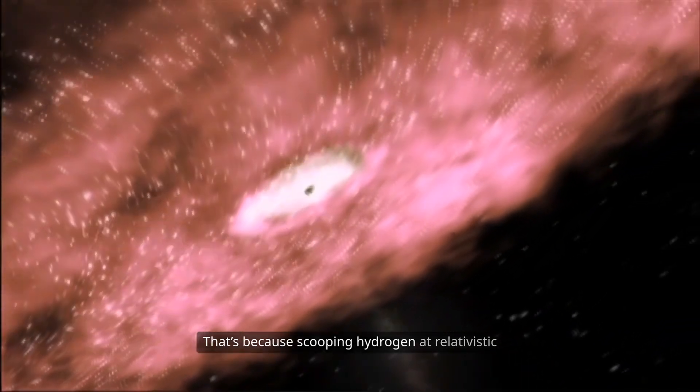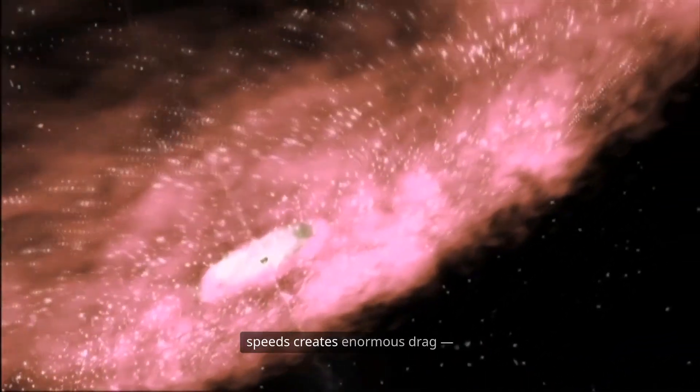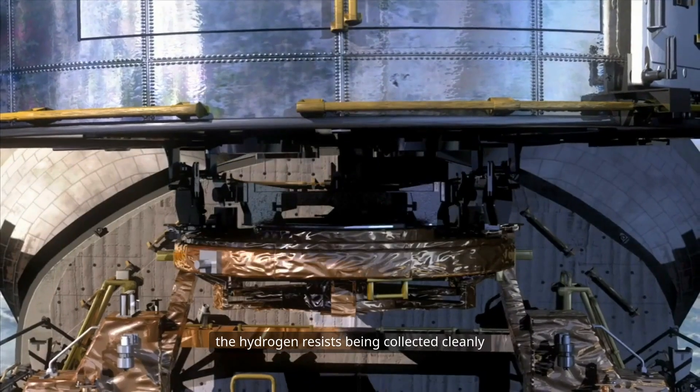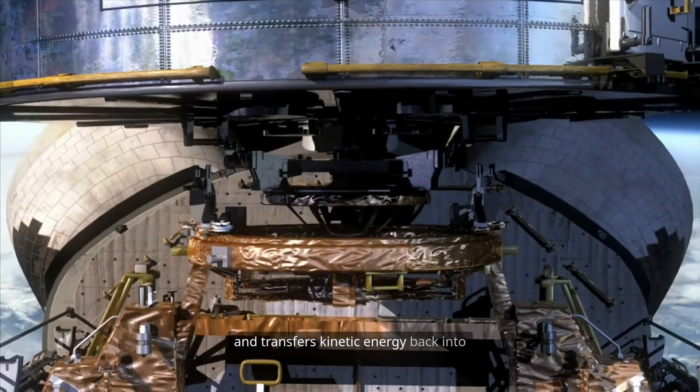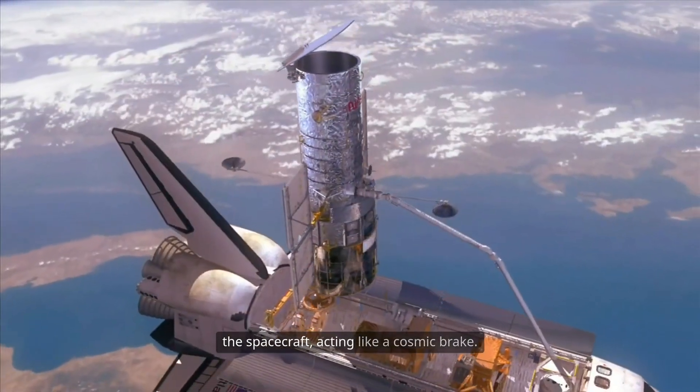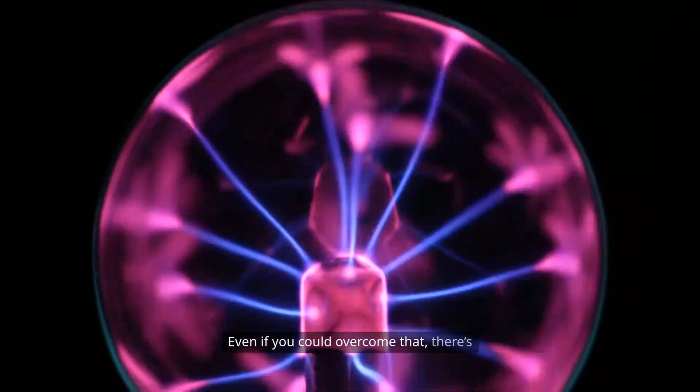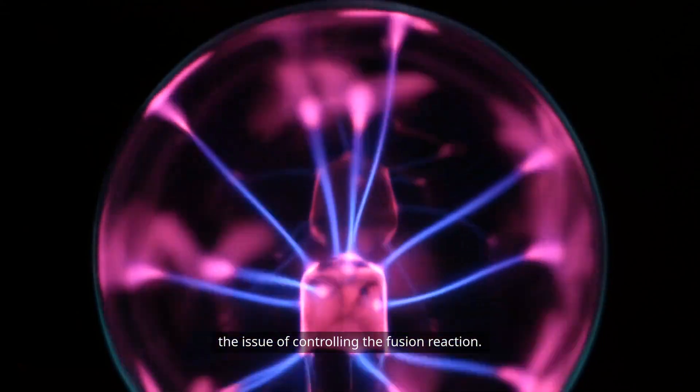That's because scooping hydrogen at relativistic speeds creates enormous drag. The hydrogen resists being collected cleanly and transfers kinetic energy back into the spacecraft, acting like a cosmic brake. Even if you could overcome that, there's the issue of controlling the fusion reaction.